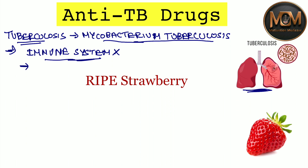I have made a mnemonic to learn the anti-TB drugs — that is 'Ripe Strawberry.' You just have to consider 'RIPE' and the 'S' from strawberry. I've put an image here so you can visualize and easily memorize it during exams. From strawberry, just consider the 'S', giving us R, I, P, E, S.